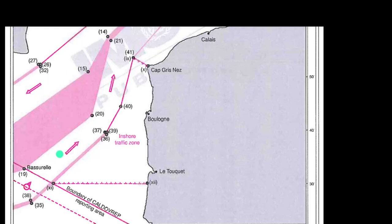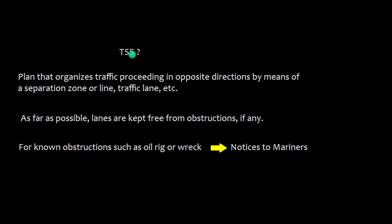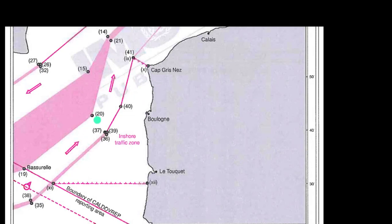A TSS example shows inbound and outbound traffic lanes separated by a separation zone. A traffic separation scheme is a plan that organizes traffic proceeding in opposite directions by means of a separation zone, a separation line, or sometimes a traffic lane. Where obstructions exist, the TSS lanes are kept away from them.